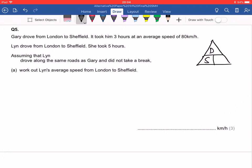So let's do our triangle. We've got speed is distance over time. So let's see what we've got. We've got Gary who drove from London to Sheffield, took him three hours, average speed of 80 kilometers per hour. So we've got time and we've got speed.